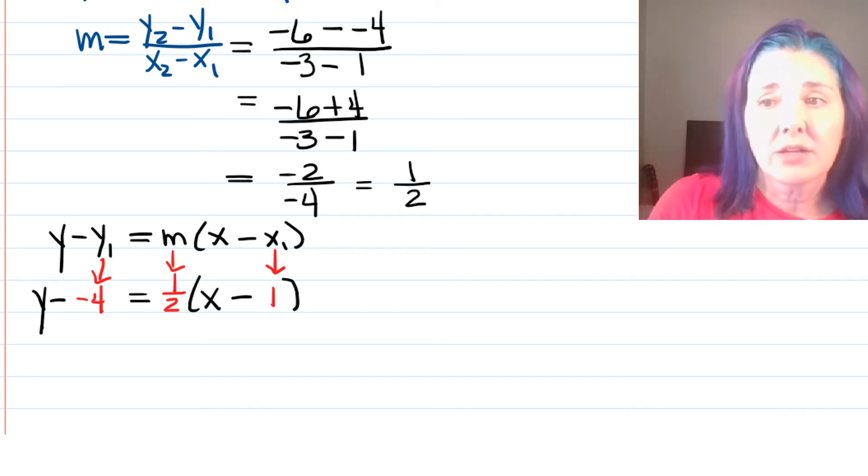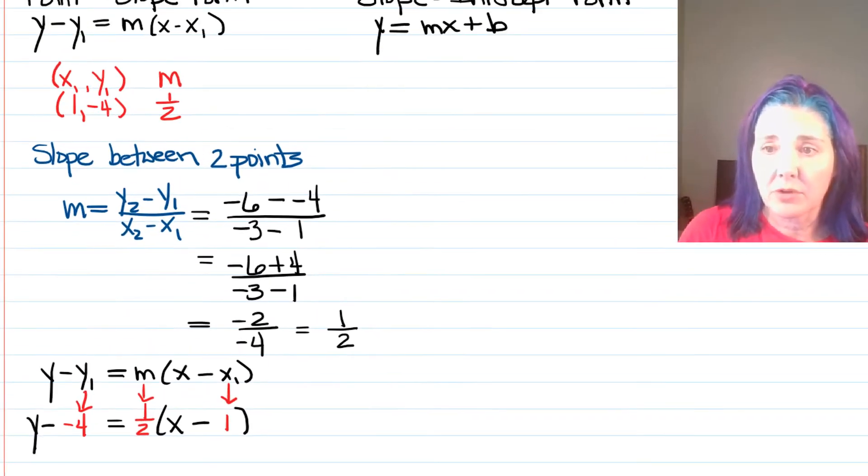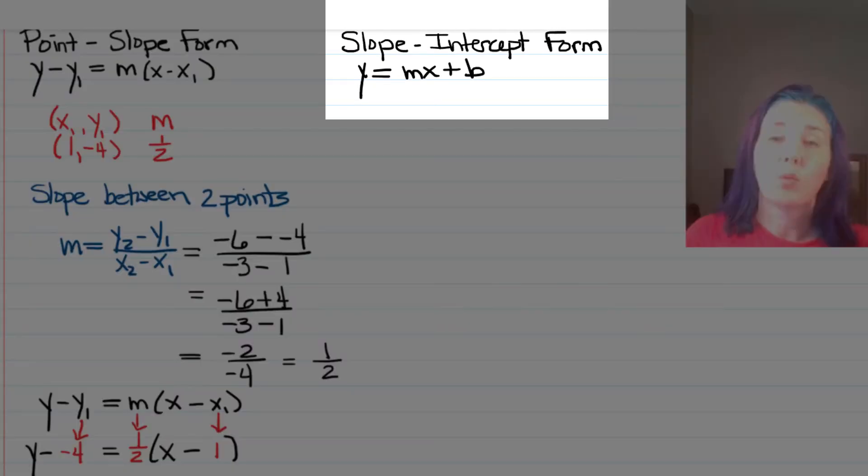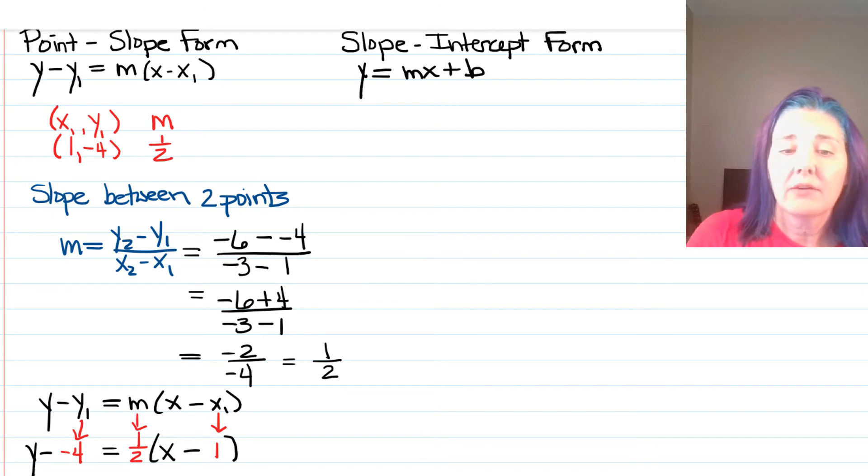Now, we were asked to give our answer in slope-intercept form, which is y = mx + b. Notice that slope-intercept form has the characteristics that y is by itself on one side, and then on the other side, we don't have any parentheses. So, whenever you have a formula that you're working on in point-slope form, and you have to convert it to slope-intercept form, you're going to distribute through the parentheses, and move that constant term over. So, let's work on that.